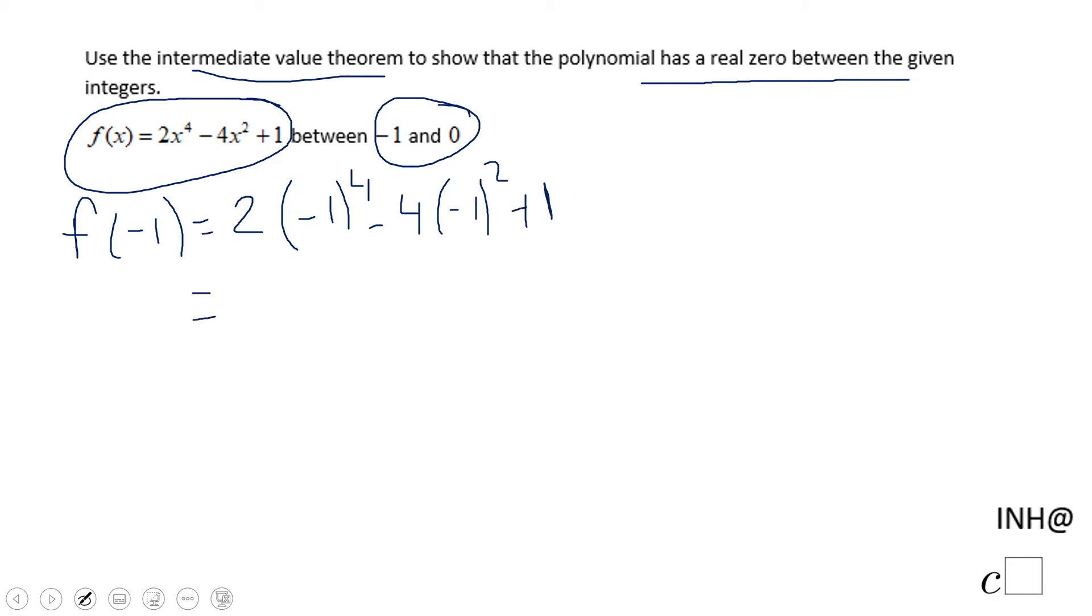Let's see here: (-1) to the fourth power is positive 1, times 2 is going to be 2. (-1) to the second power is 1, times -4 is -4. That will be -4 here and plus 1.